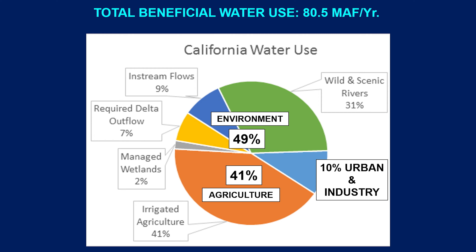Looking at the central Sierra, we see the same variability going above and below the long-term average. Moving from north to south, cumulative precipitation is progressively reduced.